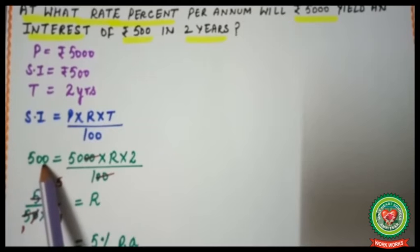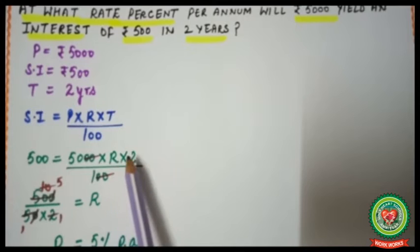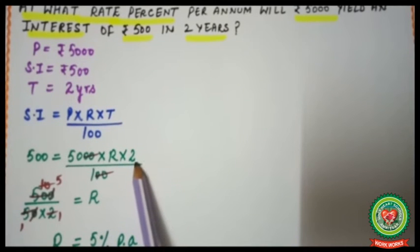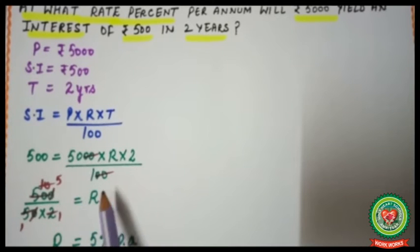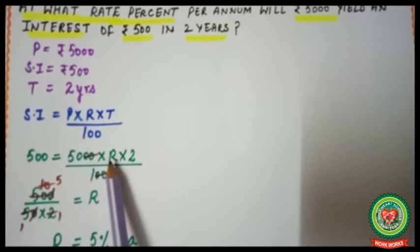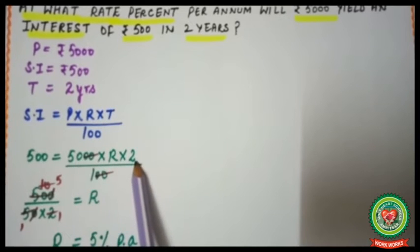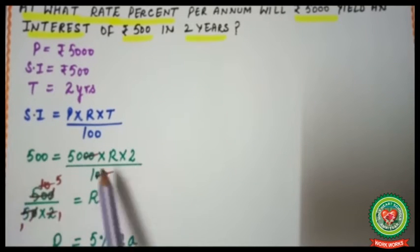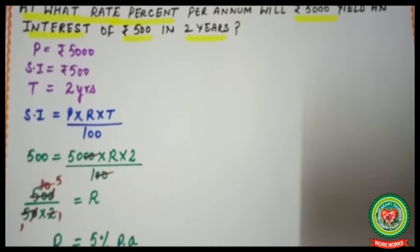SI is already given, so we put 500 = 5000 × R × 2 / 100. We can cancel two zeros: 500 = 50 × R × 2. We need to find R, so we shift 50 × 2 to the left side where it will divide: R = 500 / (50 × 2).